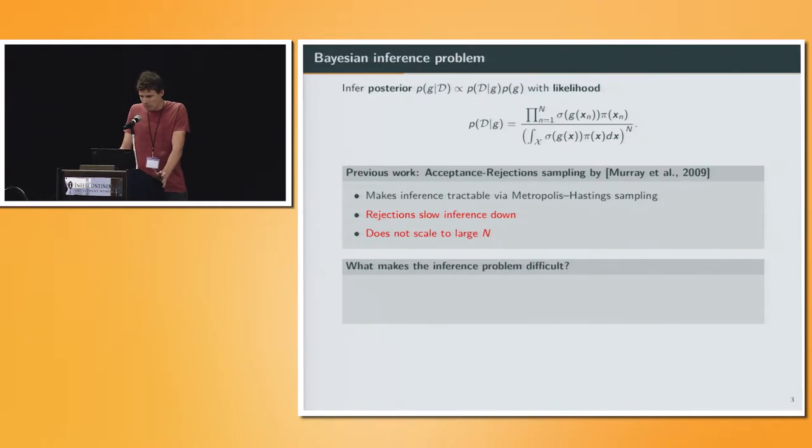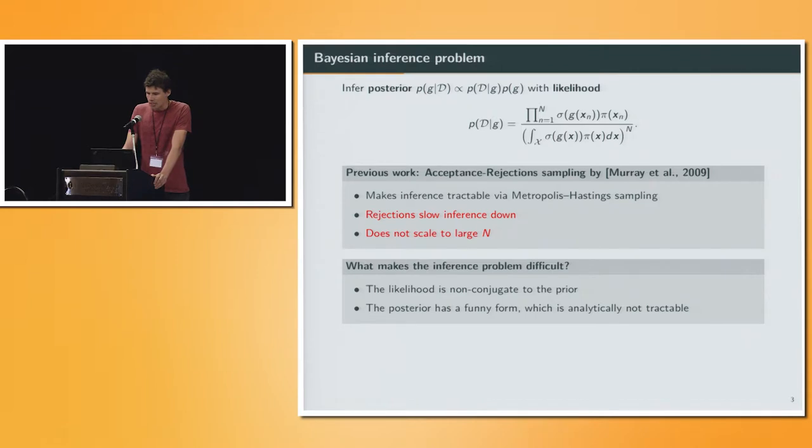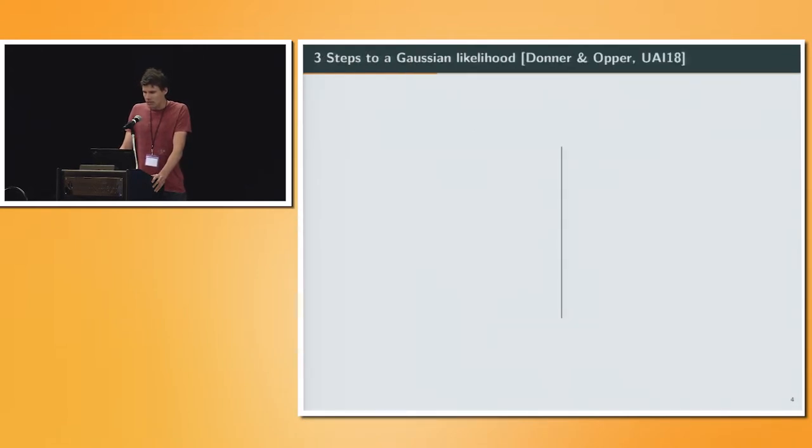So what makes the inference problem in this model so difficult? Mainly that the likelihood is non-conjugate to the prior, which makes the posterior have a funny form, which is analytically not tractable. If we could render the likelihood into a conjugate form to the GP prior, we could sample the function g directly. And so this is what we did. We do it in three steps. We used three augmentation schemes which transforms the problem always into one which is a bit simpler.